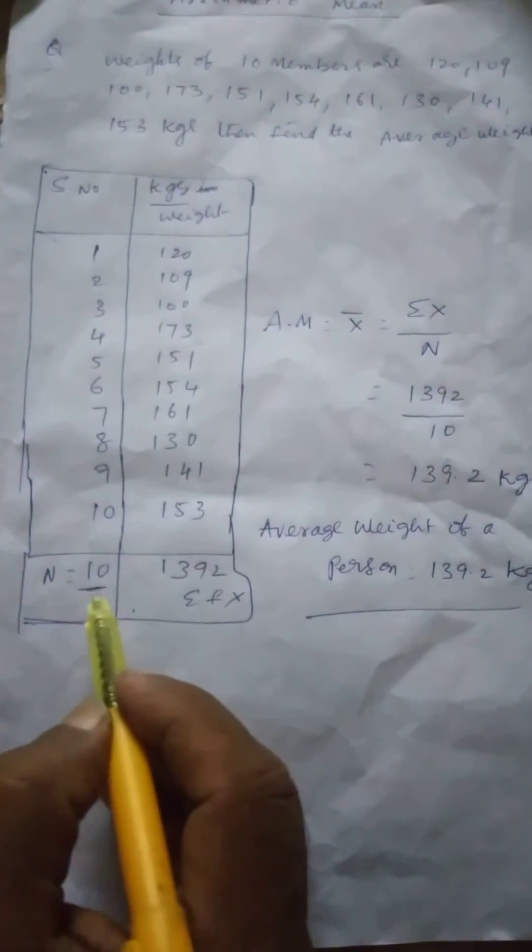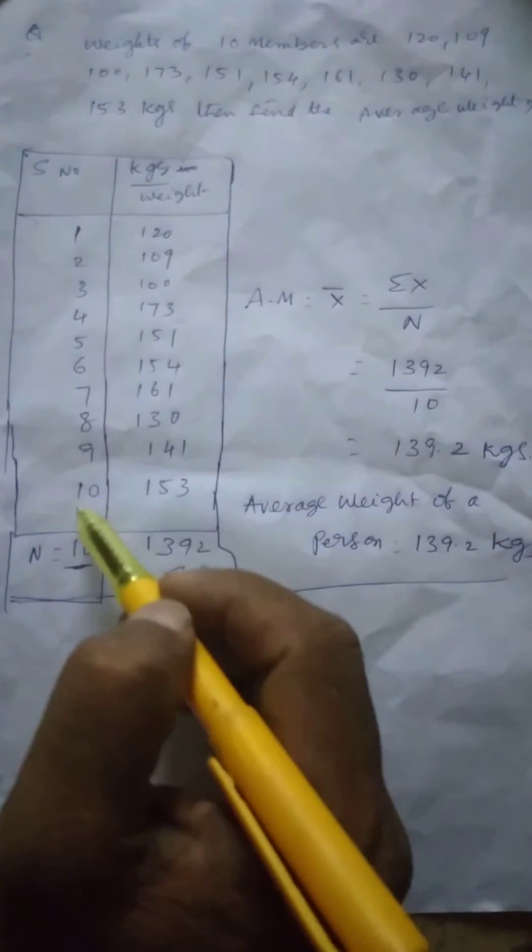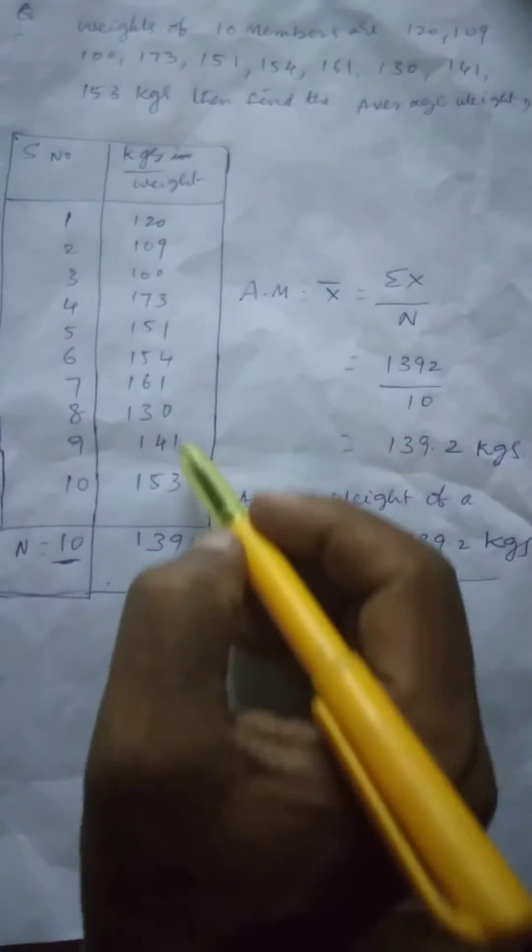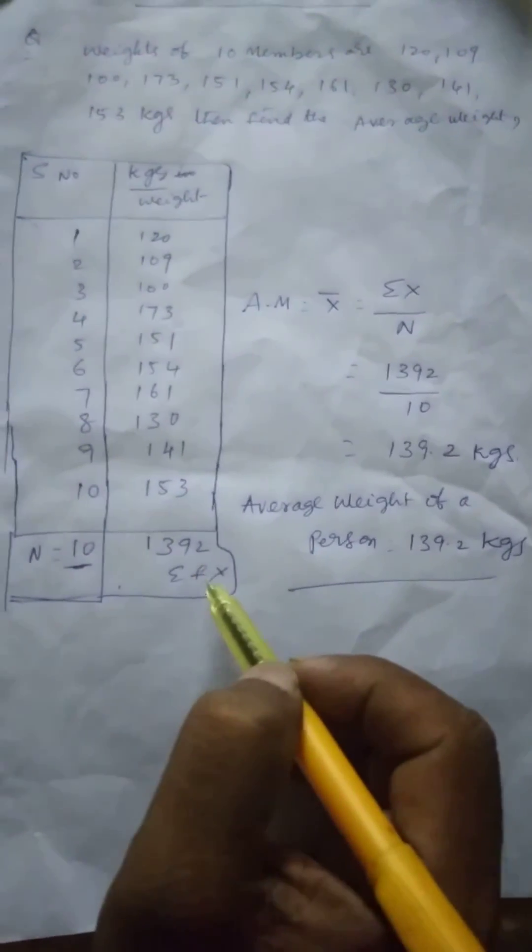So here the total numbers are 10. 1, 2, 3, 4. Here is the 10 numbers. And the total weight of 10 numbers is 1392 kg.